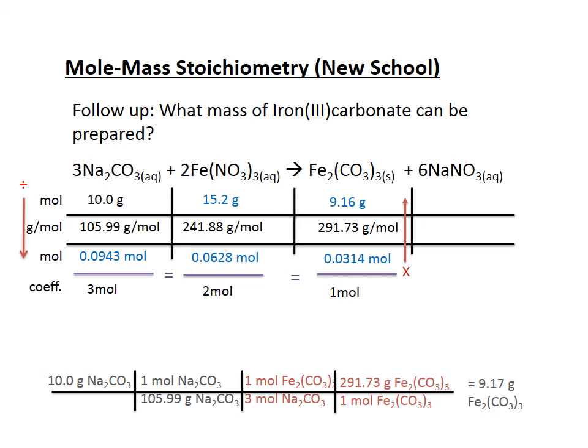Since I want grams, I multiply up: 0.0314 times 291.73 gives 9.16 grams. When I did the calculation on the bottom I got 9.17 grams — and as I always say, if we only disagree in the last digit, we can still be friends. Hopefully that gives you an insight on how to approach stoichiometry.